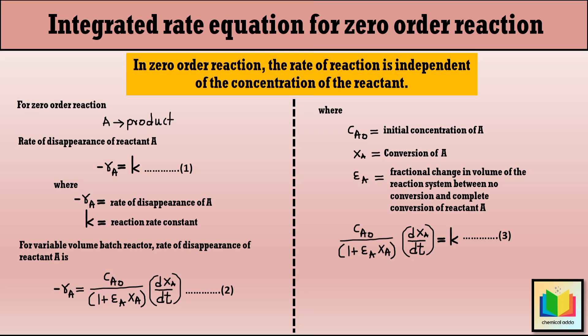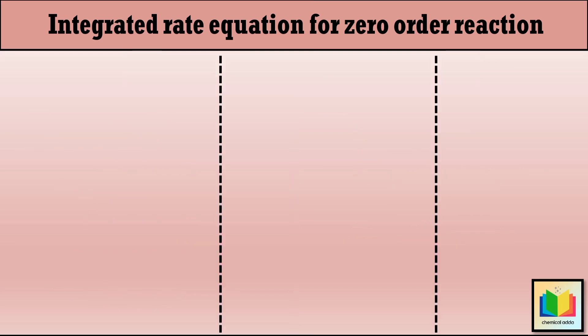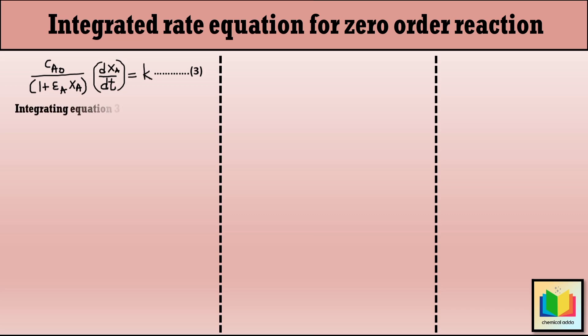To find an integrated rate equation for the zero order reaction, we have to integrate equation 3 within the limits: at T equal to zero, X_A equals zero; and at T equal to T, X_A equals X_A.